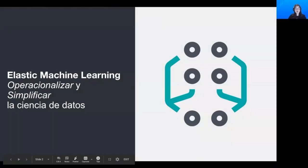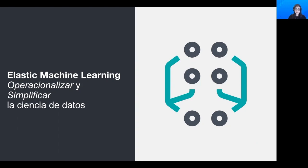En Elastic, el objetivo de Machine Learning o Aprendizaje Automático es operacionalizar y simplificar la ciencia de datos. Operacionalizar significa que la funcionalidad de Machine Learning está integrada en Elastic y ofrece una metodología completa. Los usuarios pueden crear sus propios modelos de Machine Learning, alertar e informar sobre ellos, y crear sus propias experiencias para sus propios datos y casos de uso.